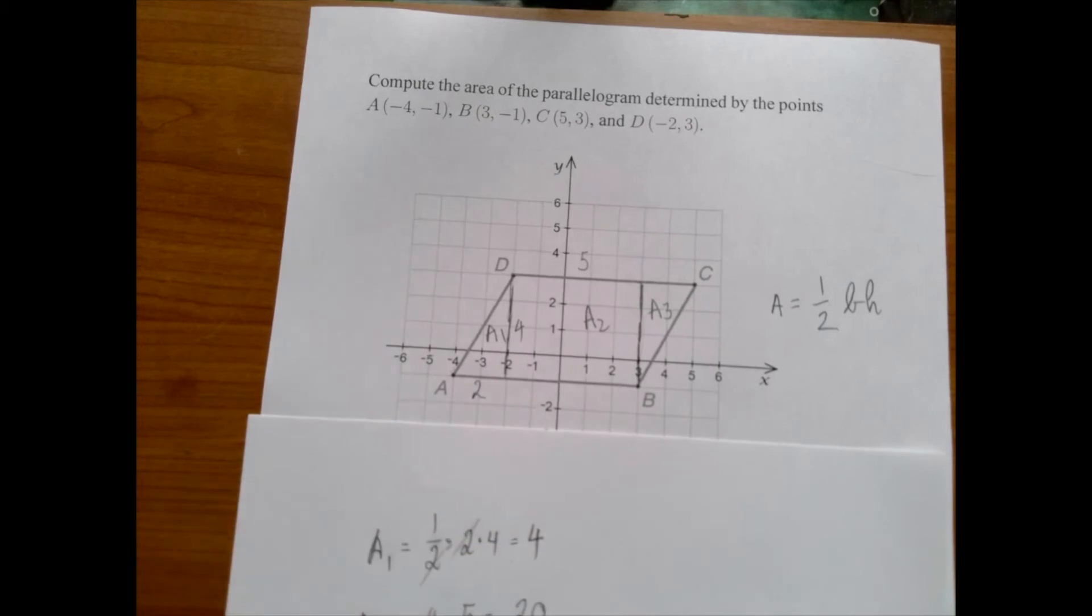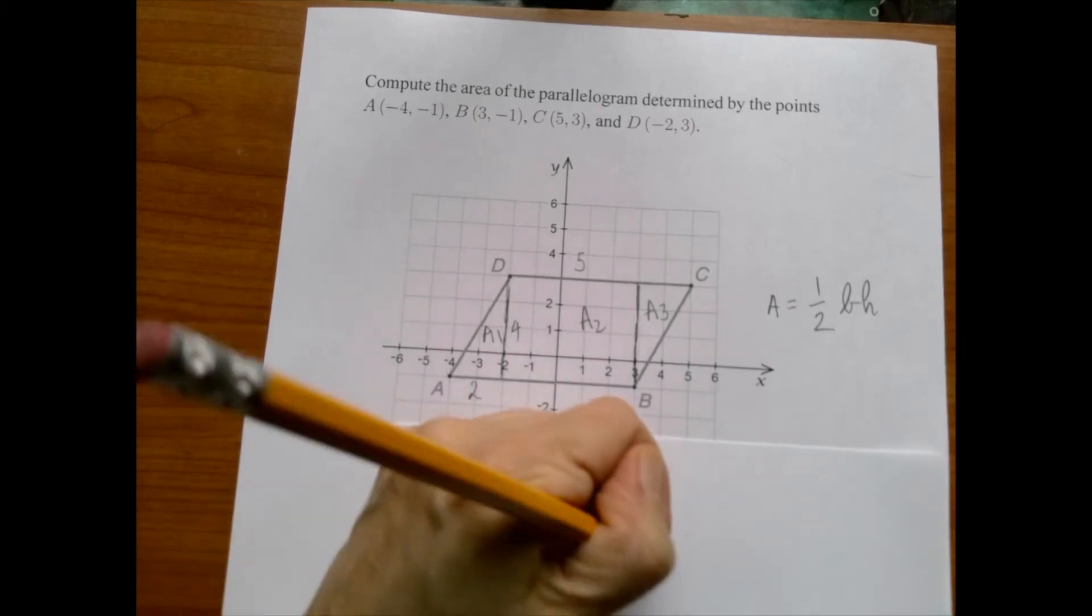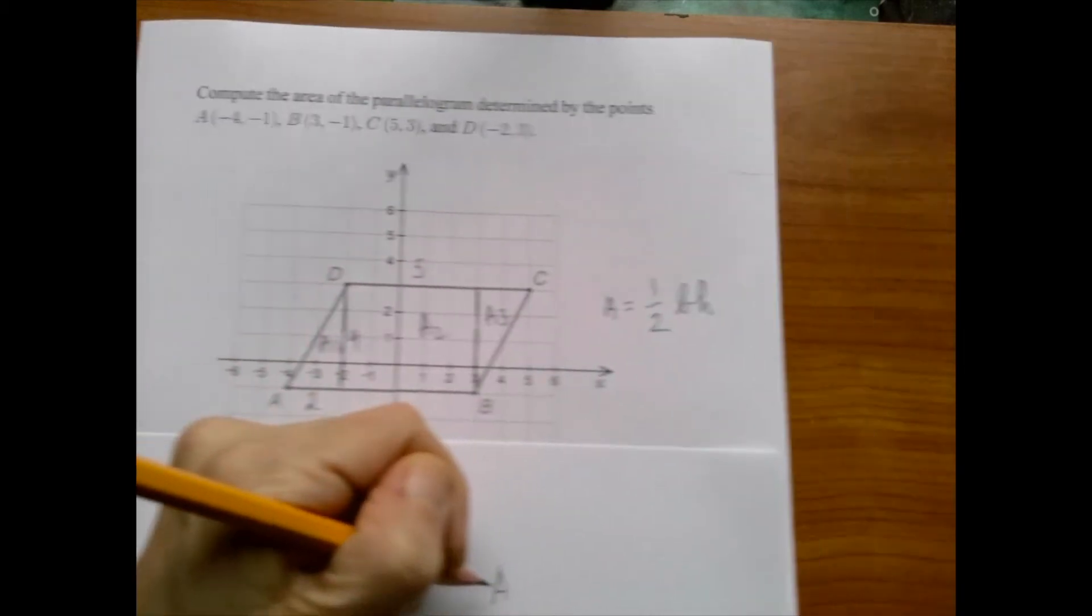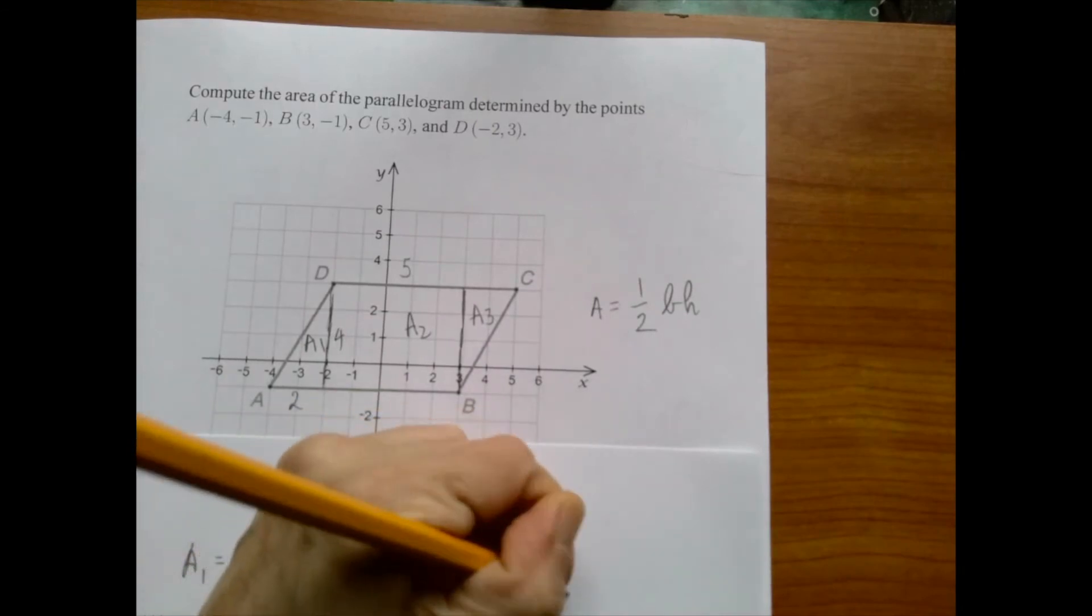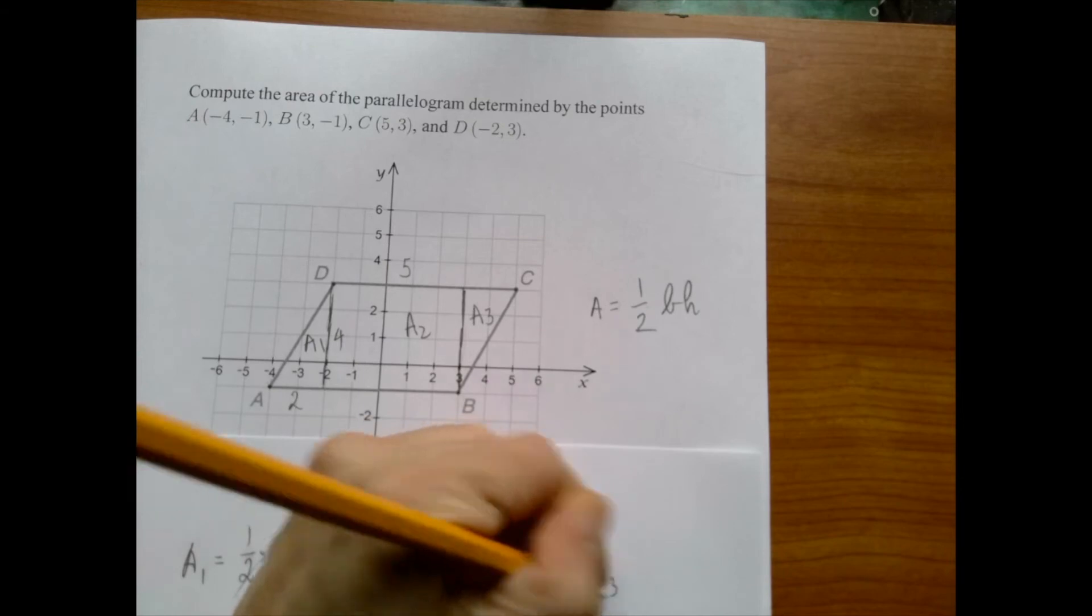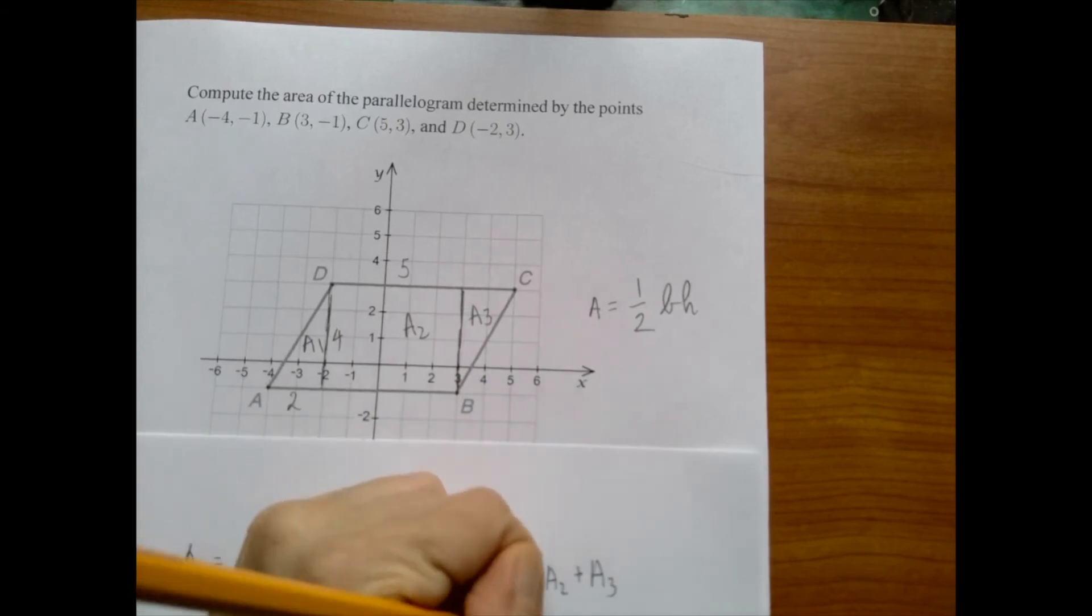The total area is the sum of these three separate areas, which is four plus twenty plus four, which is twenty-eight.